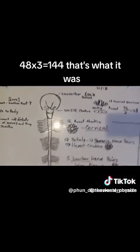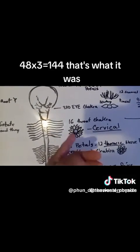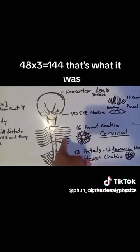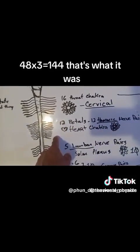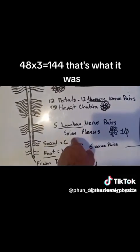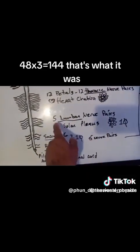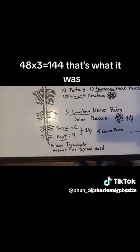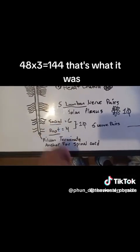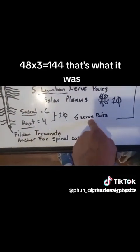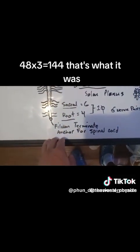But I'm digressing again. So there's 16 petals in the throat chakra, which is 16 cervical nerves. You have 12 petals, 12 thoracic nerve pairs. That's the heart chakra. 5 lumbar pairs, your solar plexus, 10. Now these numbers are important to understand. Then you have your sacral, 6 plus 4. You have sacral and the root, 6 plus 4 is 10. And you have 10 nerve pairs. Then at the very bottom where it says the root chakra, you have your filum terminale or your anchor for your spinal cord.